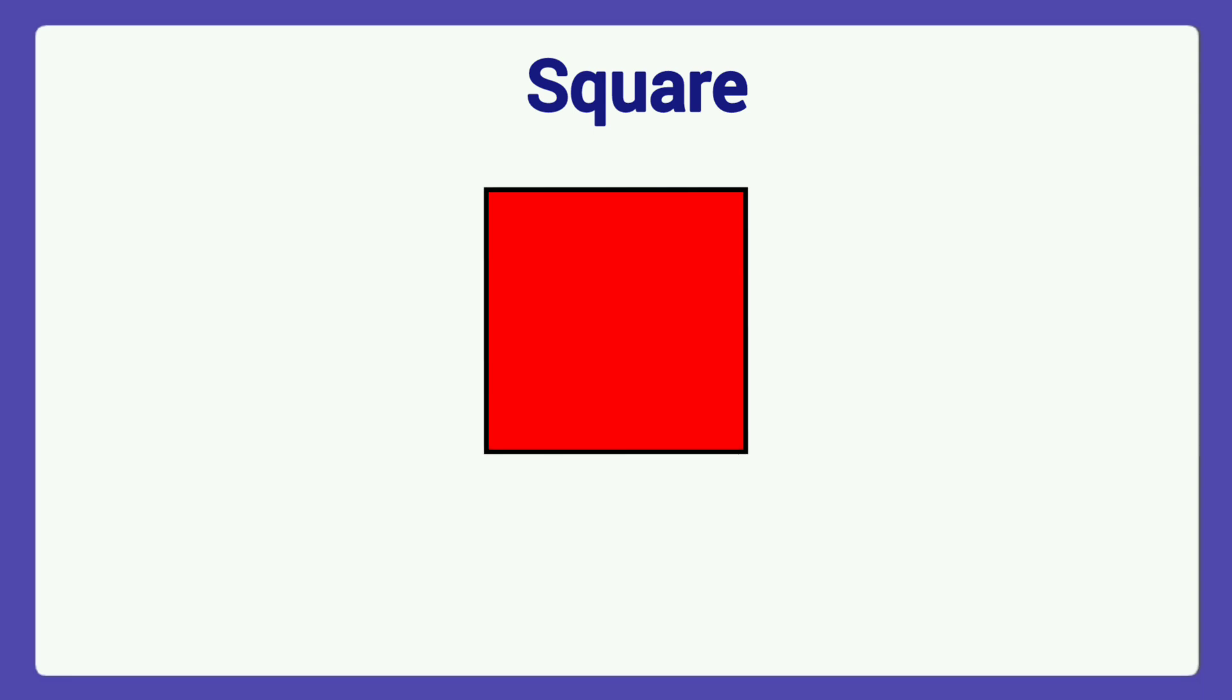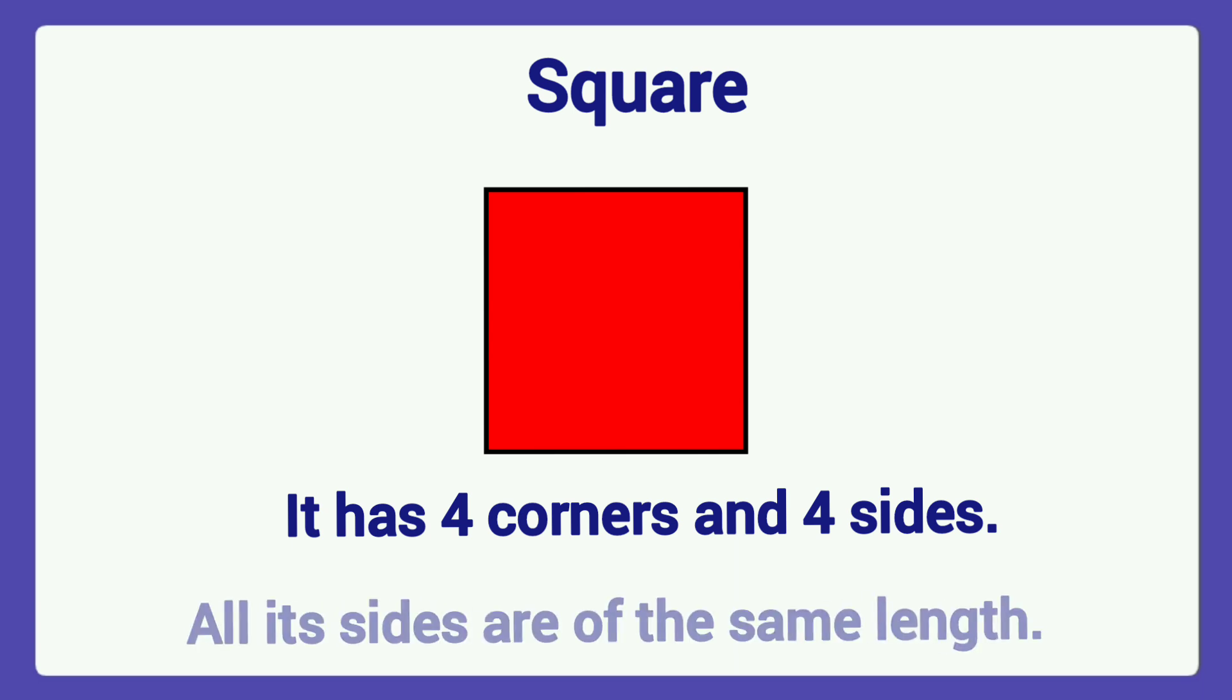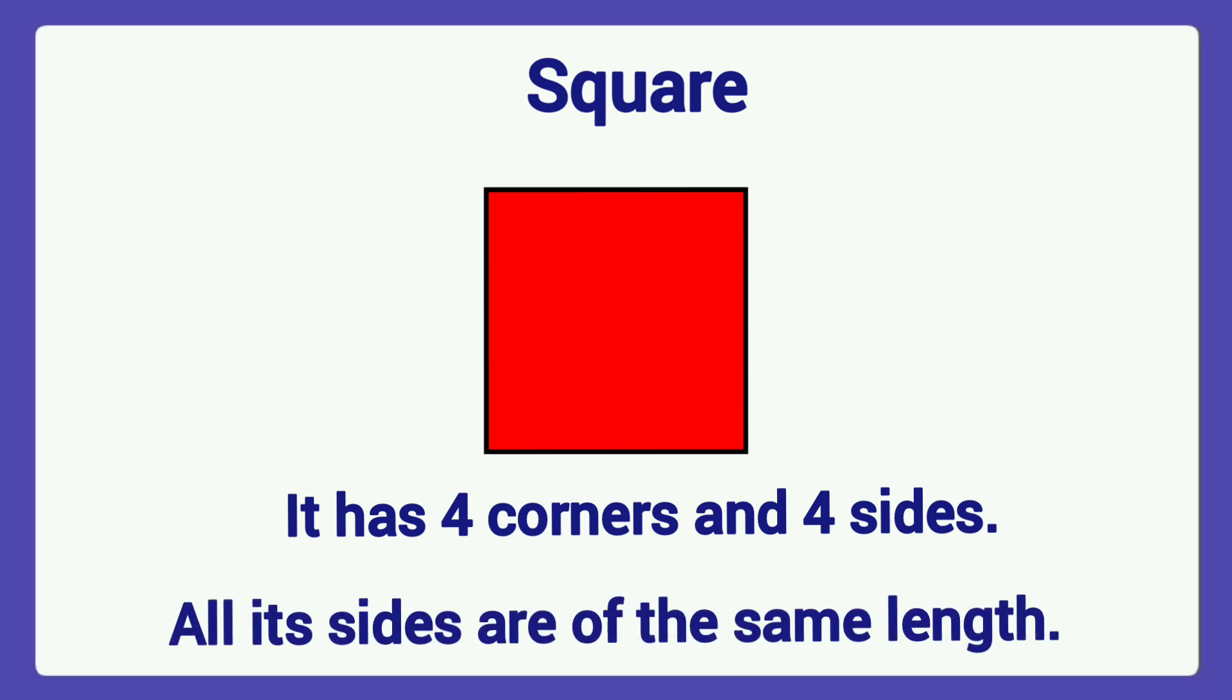Let's revise. This is a square. It has four corners and four sides. All its sides are of the same length.